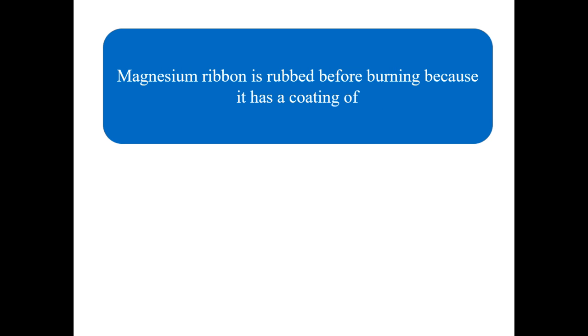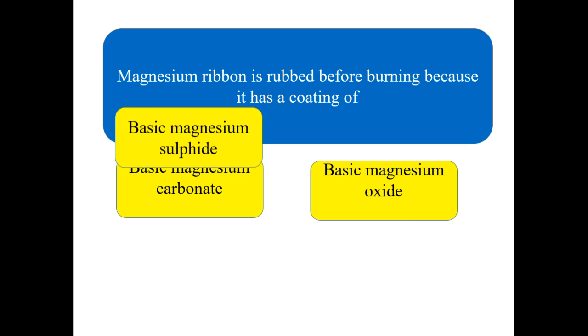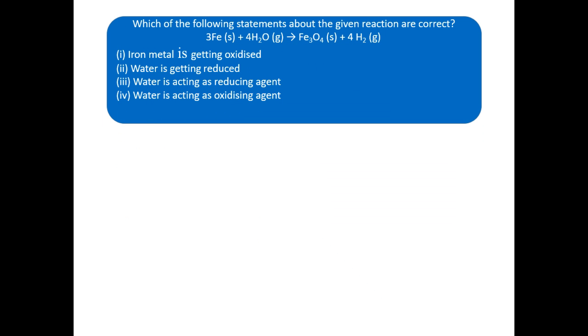Here we go for the first question. Magnesium ribbon is rubbed before burning because it has a coating. Your options are: basic magnesium carbonate, basic magnesium oxide, basic magnesium sulfide, and basic magnesium chloride. I think you got the right answer — go for the next question.